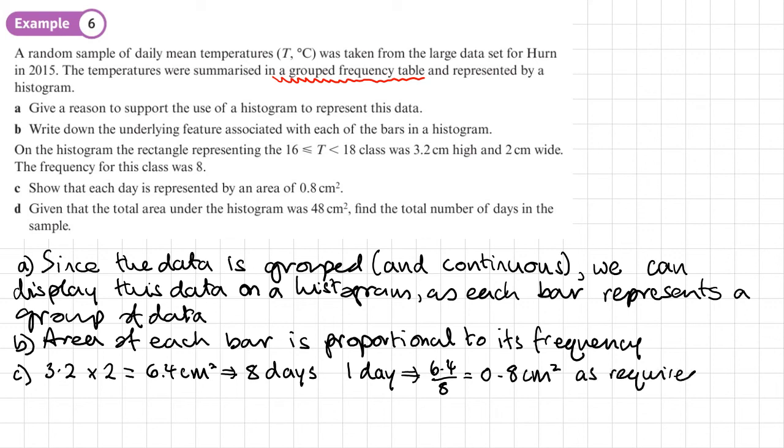And lastly, we move on to part D. Part D says, given that the total area under the histogram is 48 centimeters squared, find the total number of days in the sample.